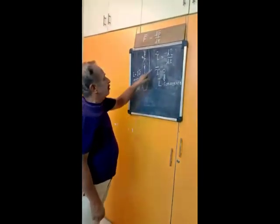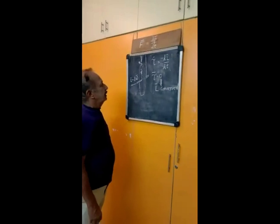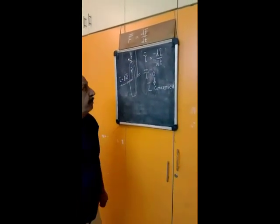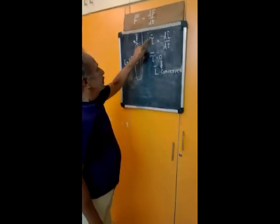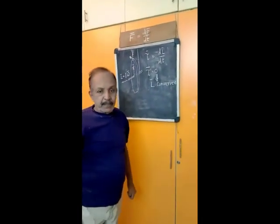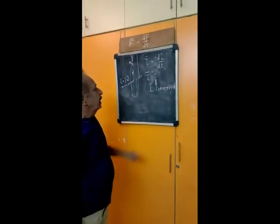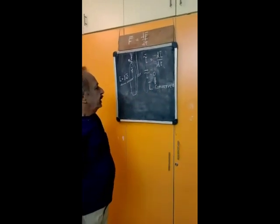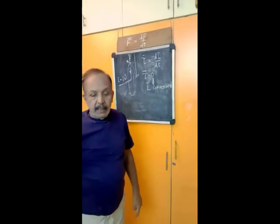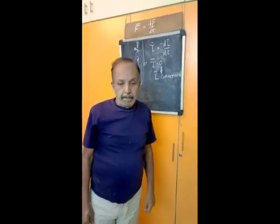The analogous form of Newton's second law in rotational mechanics is tau equals dL/dt, where tau refers to the torque acting on the system and L refers to the angular momentum. So if tau is zero — that is, torque applied is zero — L is conserved. That means angular momentum is conserved in systems on which the external torque is zero.